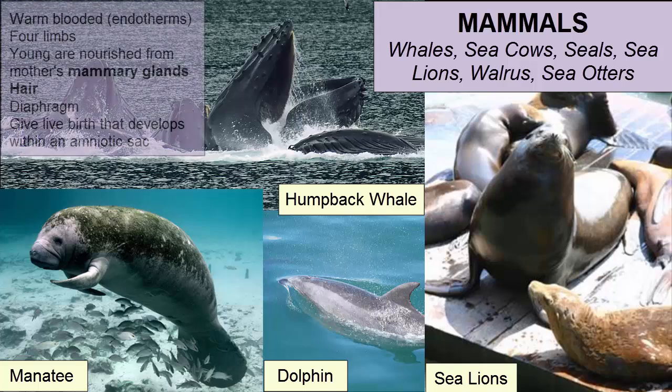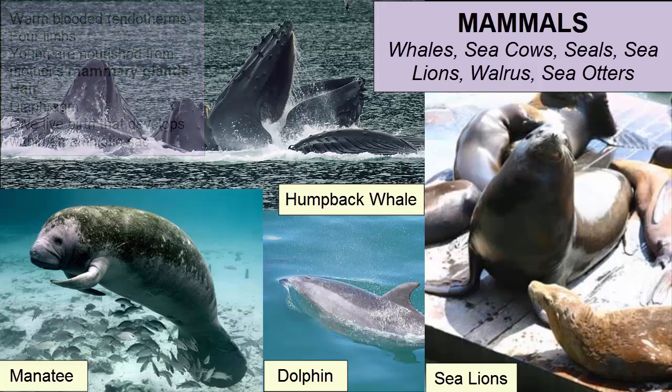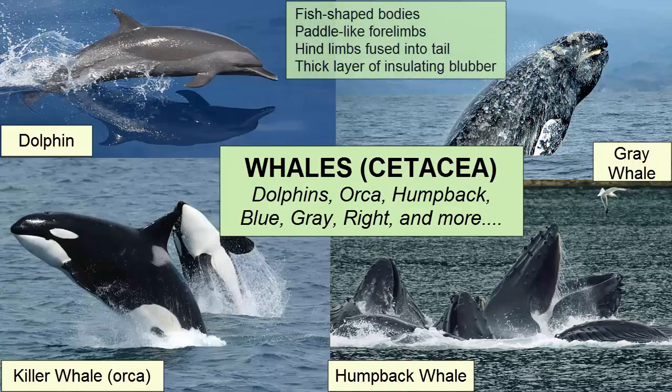Class Mammalia consists of warm-blooded, four-limbed chordates whose young are nourished from mammary glands of their mothers. They have hair, a diaphragm that ventilates their lungs, and mostly give live birth that develops within an amniotic sac. There are 4,300 marine species, all evolved from land mammals having returned to the sea 30 to 40 million years ago. Order Cetacea, or whales, consists of 79 species with fish-shaped bodies, paddle-like forelimbs, no hind limbs, and a thick layer of insulating blubber.